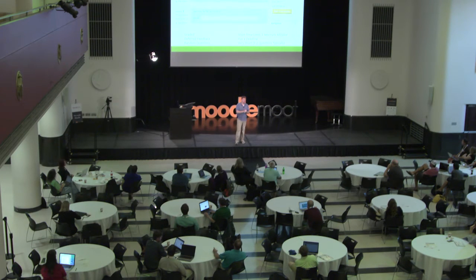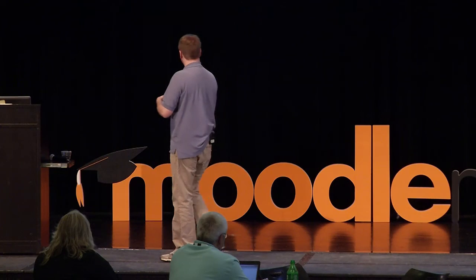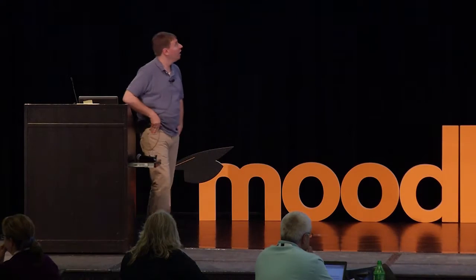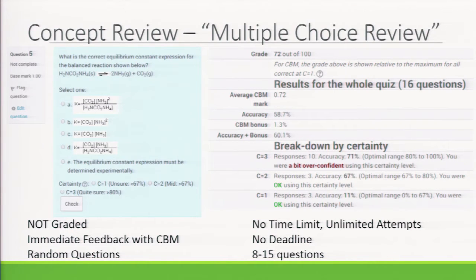I use random questions on quizzes because I want students to see something fresh and work it out within the time limit, rather than recognizing a question from last time. I let students have two attempts since I don't expect them to be perfect. Quizzes range from about two minutes — my shortest has three questions — up to about eight minutes. These are designed to be exceptionally short, just quick checks to make sure students know what they're doing.